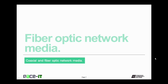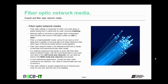Now let's move on to fiber optic network media. Fiber optic cabling is composed of small, very clear glass or plastic tubing that is coated with an outer covering called cladding. Network traffic is carried by a light beam transmitted down these fibers. The source of light is either an LED or laser diode. Fiber is a high bandwidth media carrier, meaning it can carry a lot of data over large distances without the use of a repeater.